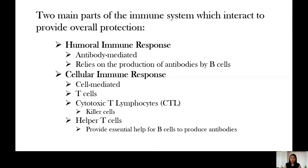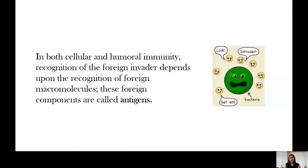The cellular immune response is cell-mediated, and this involves the T cells. We have two types of T cells: the CTL or cytotoxic T cells, and the helper T cells. The cytotoxic T cells are the ones that kill or eat up the pathogens, while the helper T cells, as the name suggests, help or aid the B cells to produce antibodies.